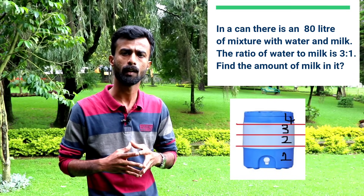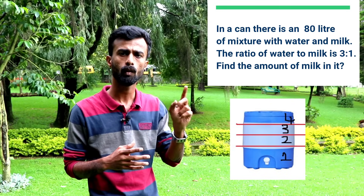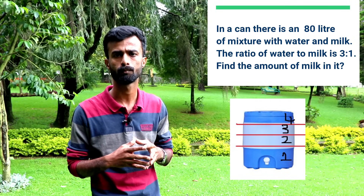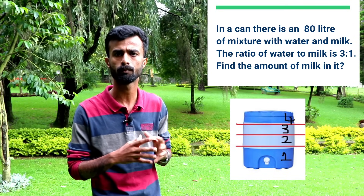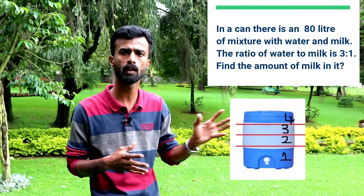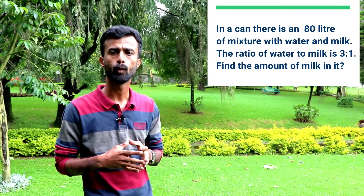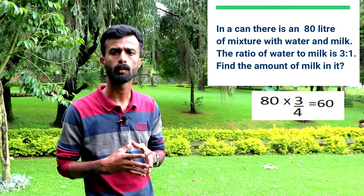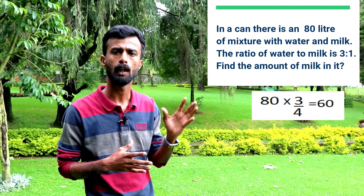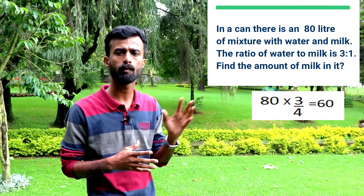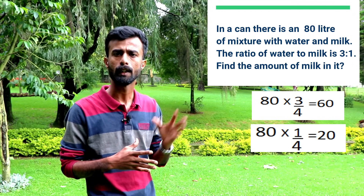If we take this picture, it is 4 parts total. 3 parts are water. We give the total as 80. What is the value? 80 into 3 by 4 equals 60. That is the quantity of water — 60 litres. If we add 20 litres for milk, the total is 80 litres.